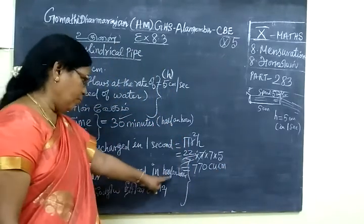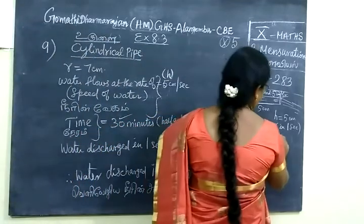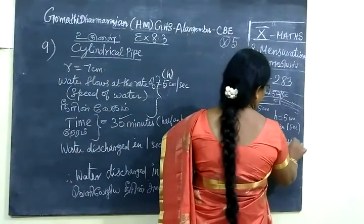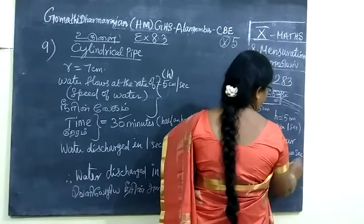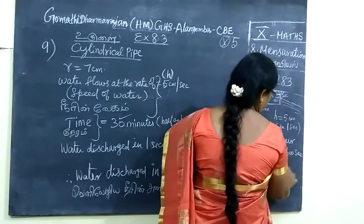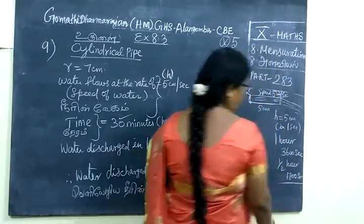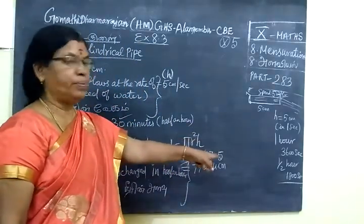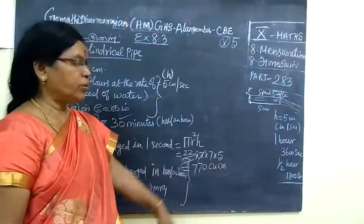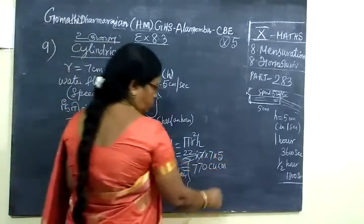Half hour - we know one hour is 3600 seconds. Therefore, for half hour, 1800 seconds. One hour is 60 minutes, so half hour is 1800.